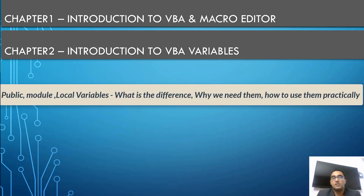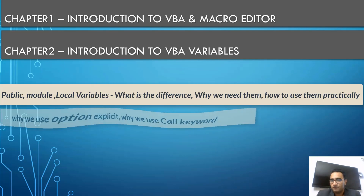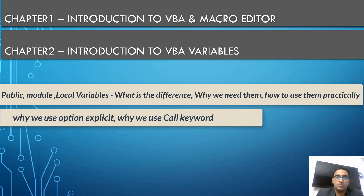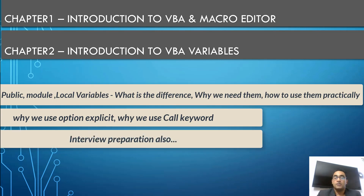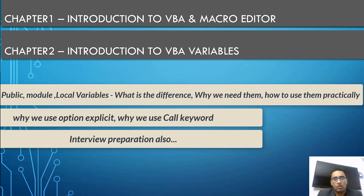Next we cover variables: public variables, global variables, local variables, and why we use them. This is a very important part, especially for VBA interviews. Interview questions include things like: list the data types in ascending order, what is Option Explicit, why do we use global variables, how do you define them, and what is the difference between the Integer and Single data types.